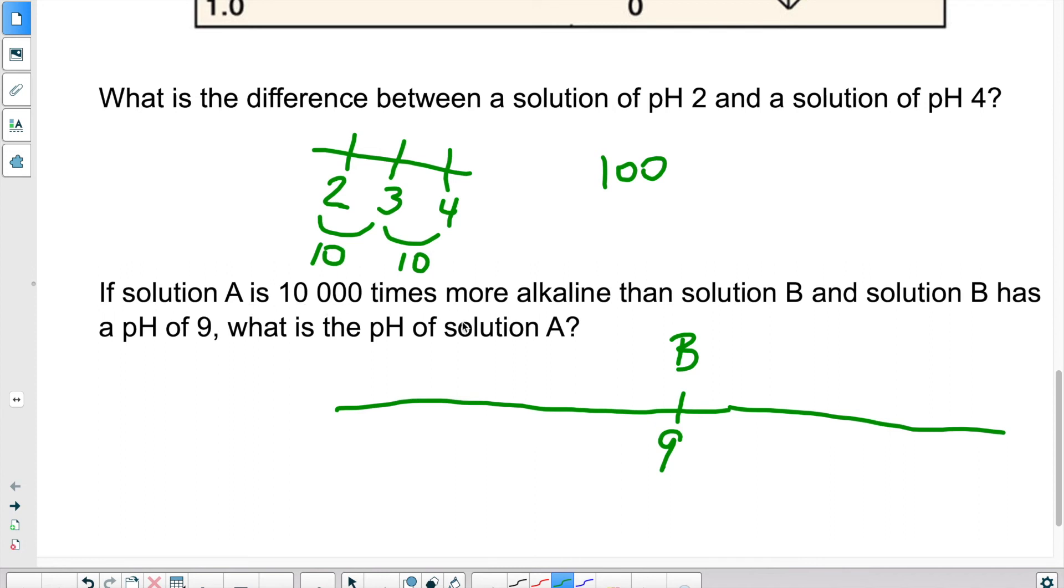Now, solution A is 10 times more alkaline. So in other words, you have to go in this direction. So where is solution A? It's somewhere over here. We want to know what the pH is. So let's put the other values. 12, 13, and 14.